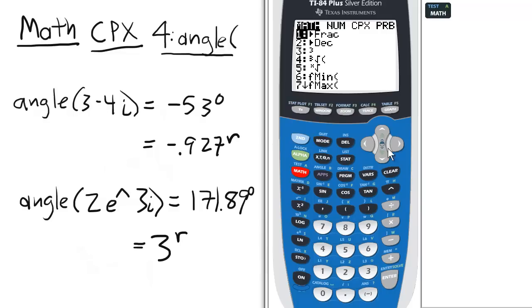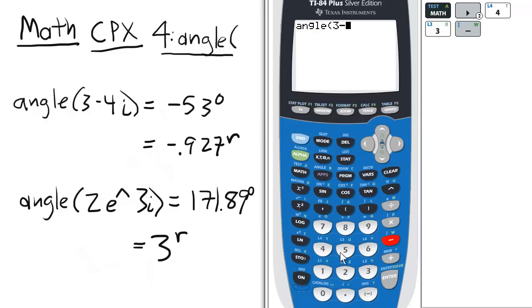To see it in action we go to math, complex, choose option 4 for angle, and we'll enter 3 minus 4i, and press enter, and it's approximately negative 53 degrees.